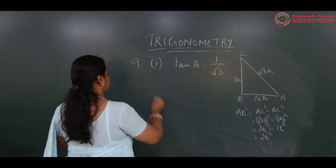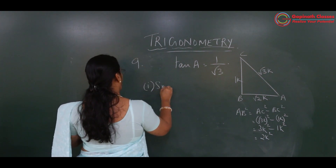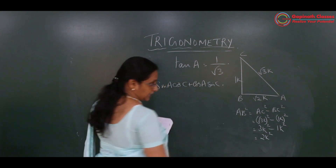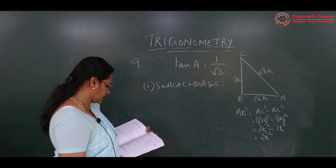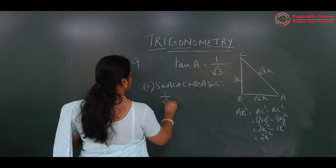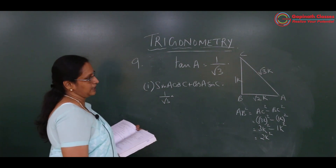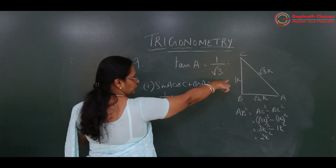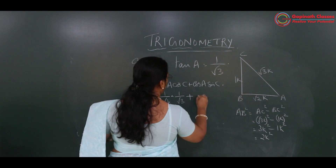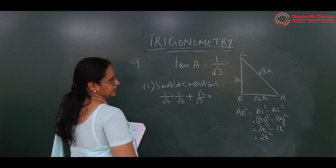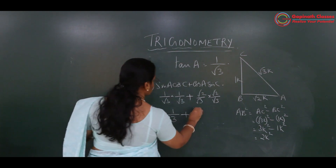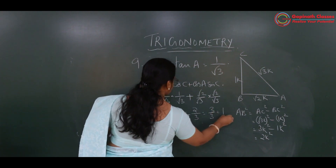We evaluate: sin A times cos C plus cos A times sin C. Sin A is opposite upon hypotenuse: 1 upon root 3. Cos C is also adjacent upon hypotenuse for angle C: 1 upon root 3. Cos A is root 2 upon root 3. Sin C is root 2 upon root 3. So we get (1 upon root 3) times (1 upon root 3) plus (root 2 upon root 3) times (root 2 upon root 3): 1 by 3 plus 2 by 3, which equals 3 upon 3. The answer is 1.